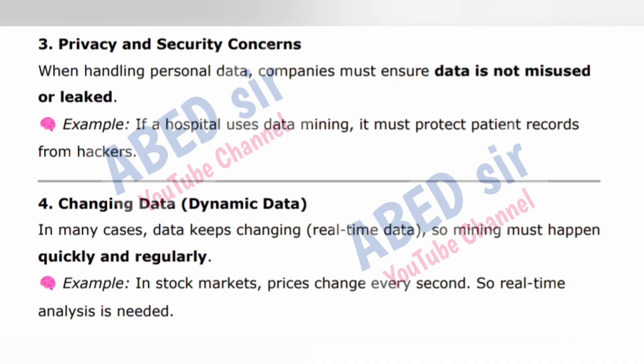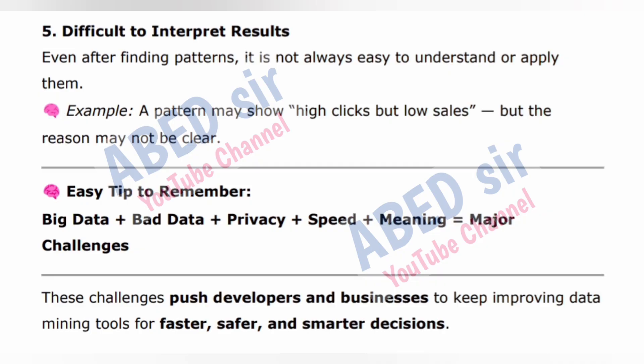4. Changing data (dynamic data) — in many cases, data keeps changing in real time, so mining must happen quickly and regularly. Example: in stock markets, prices change every second, so real-time analysis is needed. 5. Difficult to interpret results — even after finding patterns, it is not always easy to understand or apply them. Example: a pattern may show high clicks but low sales, but the reason may not be clear.